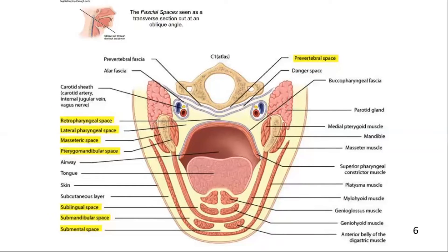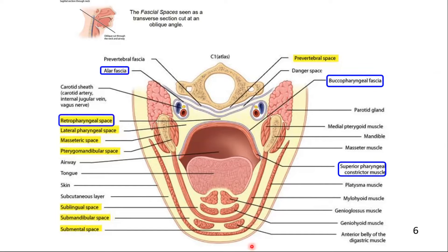Now we will define these spaces. First, note the superior constrictor muscle, buccopharyngeal fascia, and the alar fascia. Between the buccopharyngeal fascia and the alar fascia, there is the retropharyngeal space. Next is the pre-vertebral fascia. Between the alar fascia and pre-vertebral fascia, there is the danger space. The pre-vertebral space is behind the pre-vertebral fascia.